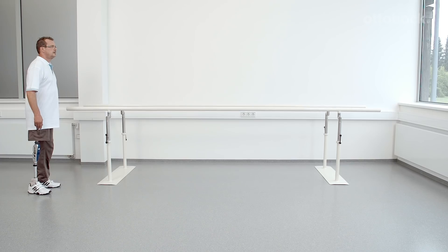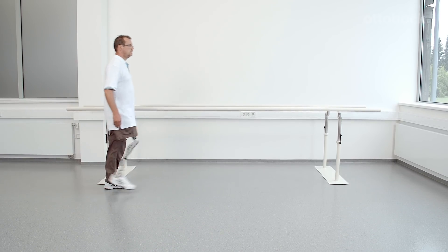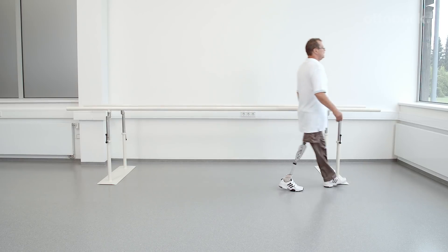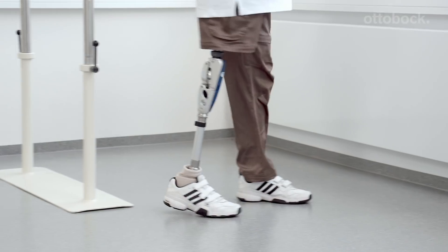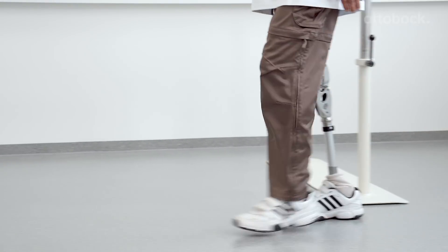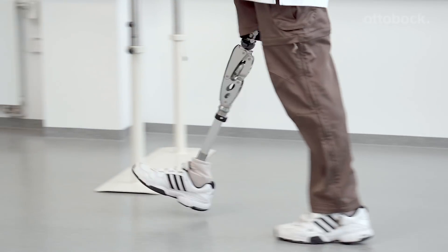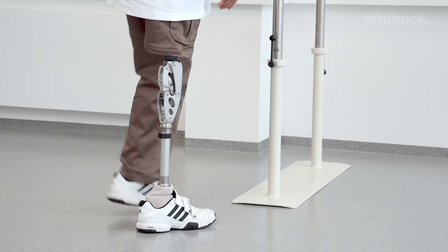To see if the swing phase is set optimally for the user, the user should walk at varying walking speeds. Equipped with a powerful hydraulic and a unique joint construction, the 3R60 controls all swing movements of the prosthesis even at higher walking speeds.